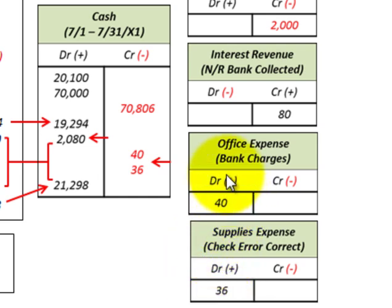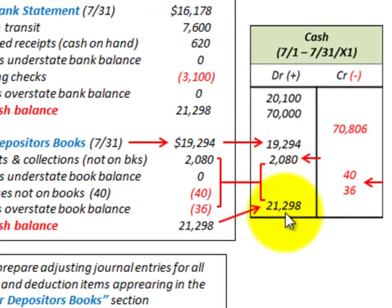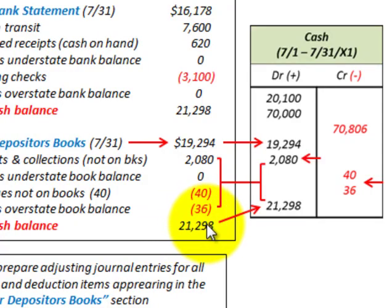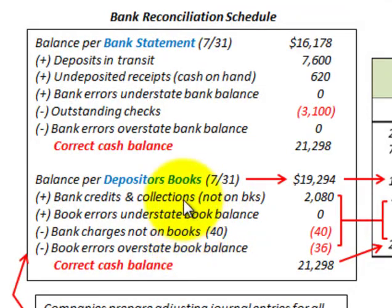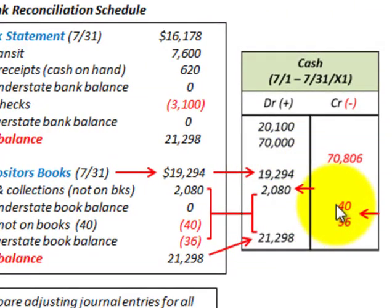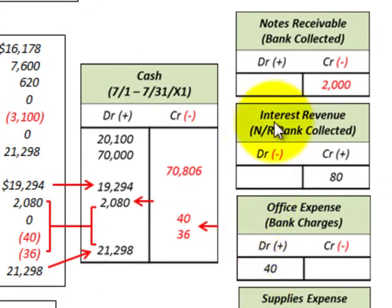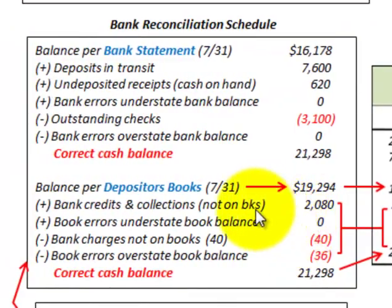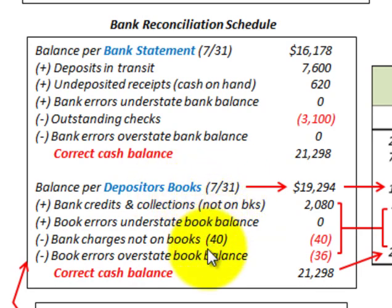Everything balances out for our corrections, and the ending balance in the cash account based on all our totals comes to $21,298 — matching the balance per the depositor's books in this bank reconciliation. Remember: any additions and subtractions per the depositor's books section must be reflected in the company's cash account, with the balancing amount going to an asset, expense, or revenue account as appropriate.